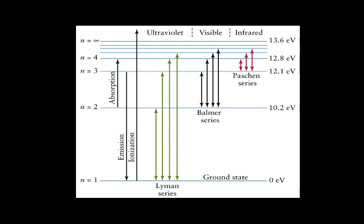Second, you can see the black lines here — when electrons from higher orbits jump into the second orbit, you get the Balmer series, and the frequencies of these radiated radiations lie in the visible region. The red color lines represent when any electron jumps from a higher orbit into the third orbit — that gives the Paschen series, and its values lie in the infrared region.